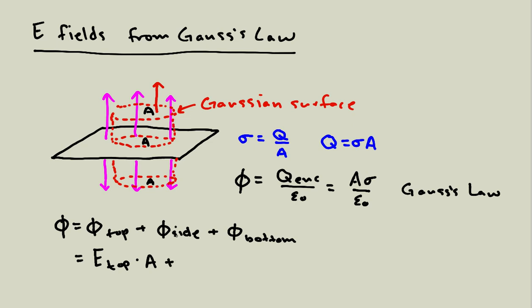Next, we consider the flux through the side. For the side, the electric field vector points up or down, and the area vector points directly outward — perpendicular to the axis. No matter which spot I consider, the electric field is always along that surface and the area vector is perpendicular, so that side has a flux of zero. Finally, for the bottom, the area vector points outward which is now downward, and the electric field also points down. So the flux through the bottom is E at the bottom times A.